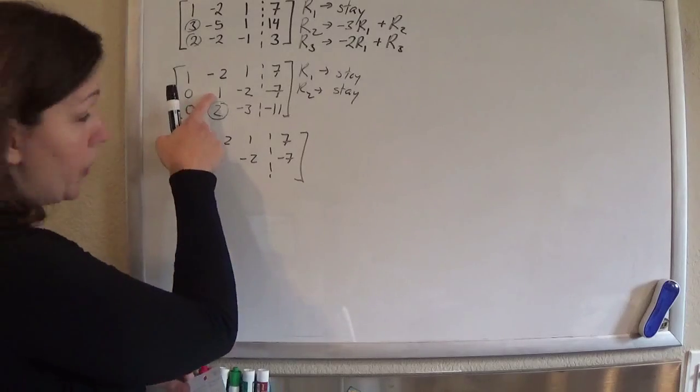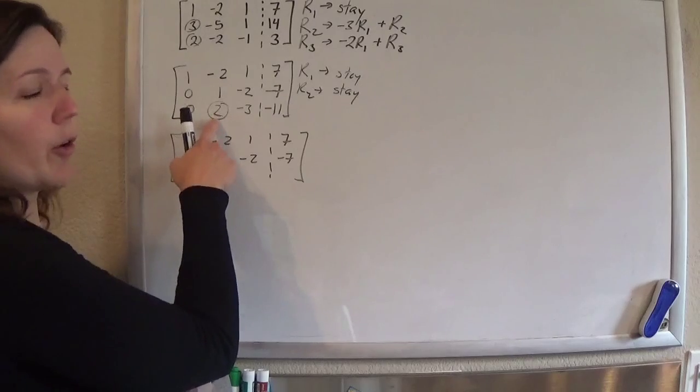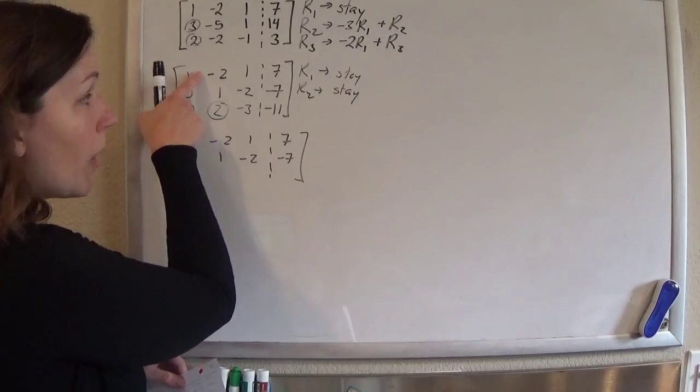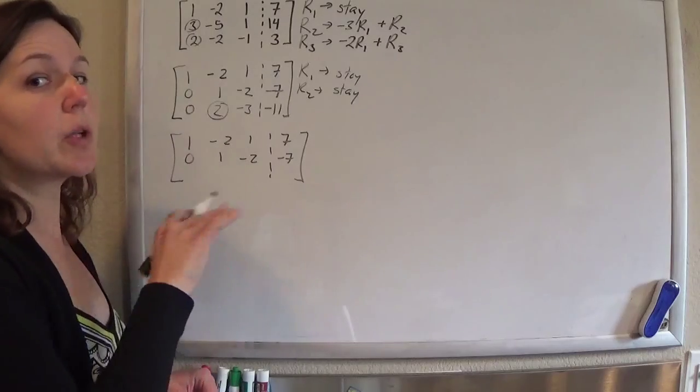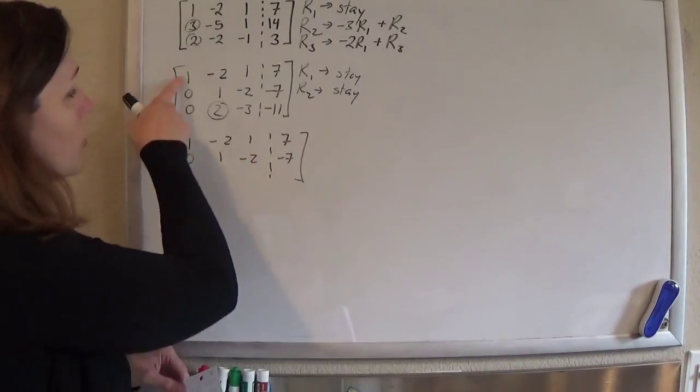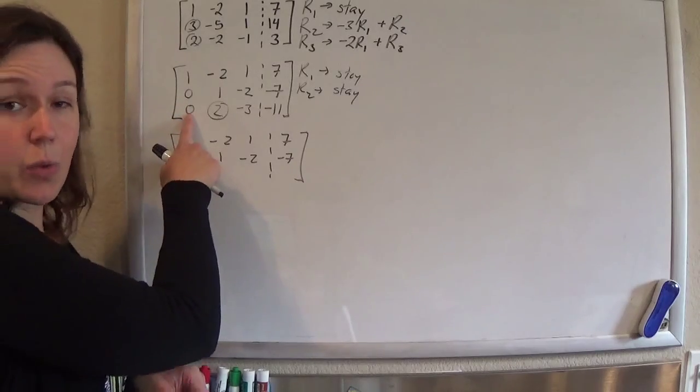And I'm going to use row 2 to get my 0 in column 2. Now you might be tempted to use row 1 and say, oh look, if I add those together, it goes away, but don't do it. If you do it, you'll lose that 0 that you worked so hard to get.